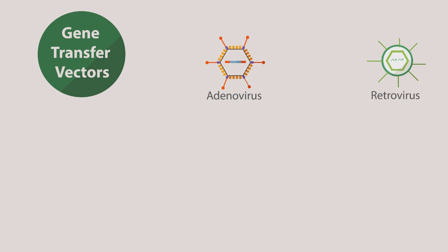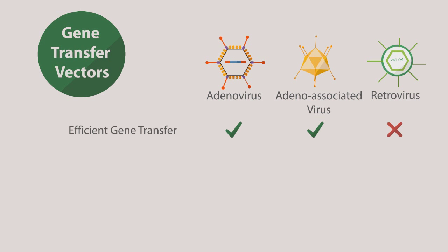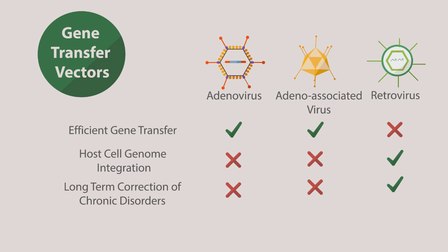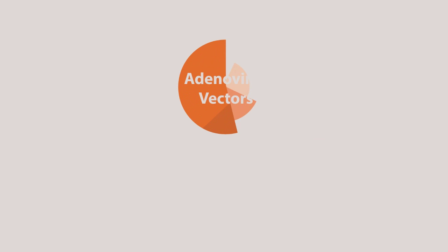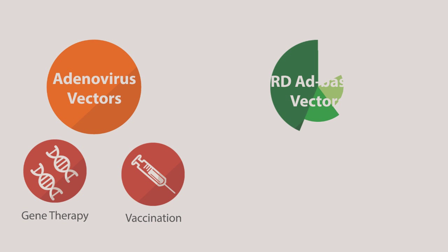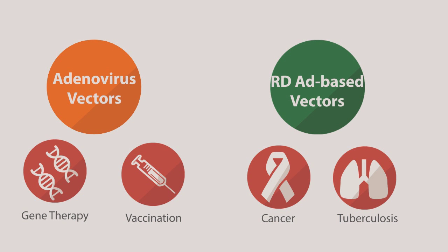Many different viruses are being developed as gene transfer vectors, but the most advanced ones are adenovirus, retrovirus including lentivirus, and adeno-associated virus. One of the major advantages of adenoviral vectors is that they provide the most efficient gene transfer among other viral vector systems for many cell types. Since they do not integrate into the host cell genome, there are low disturbances in genes. They are not suitable for long-term correction of chronic disorders, but are suitable for therapeutics that need high transient expression. Adenovirus vectors can be used for gene therapy and vaccination, and replication-defective adenovirus-based vectors have also been used to treat cancer and tuberculosis.